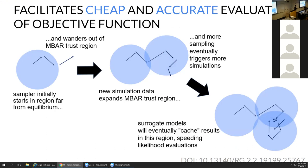If an optimization engine initially requested that properties be estimated using certain force field parameters, and then the optimization engine makes a small perturbation to those parameters and requests re-evaluation, our server will receive that request, see that it has cached data sitting on disk, automatically know how to load it up, and deploy the reweighting method. It checks whether it can calculate the desired properties with sufficient confidence using the new force field parameters — at speeds orders of magnitude faster than running new simulations. If yes, it returns the result. If not, the server automatically knows when to fall back and re-launch a new set of simulations to generate fresh cached data.